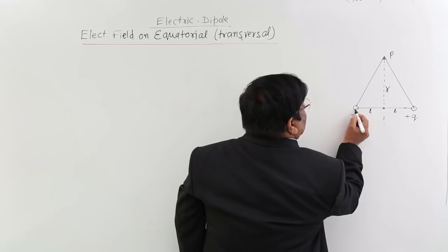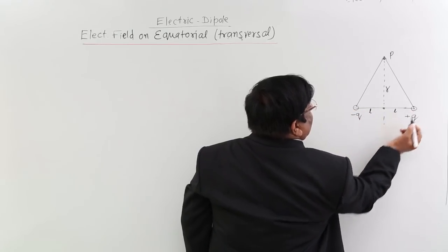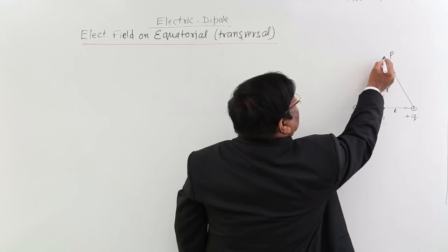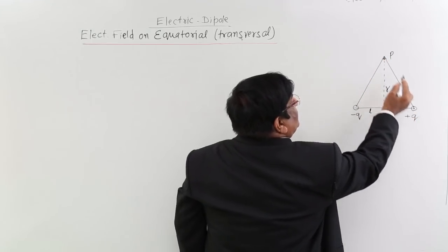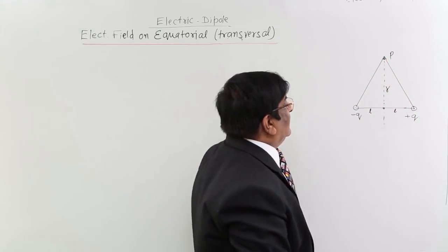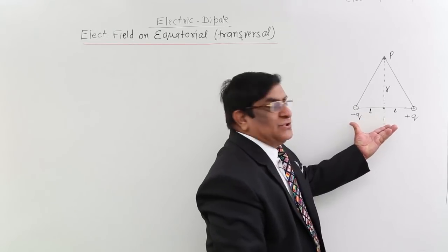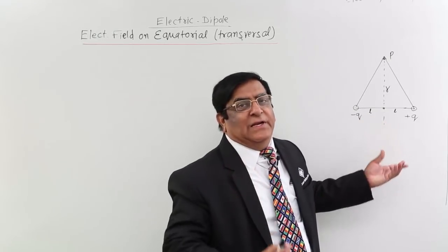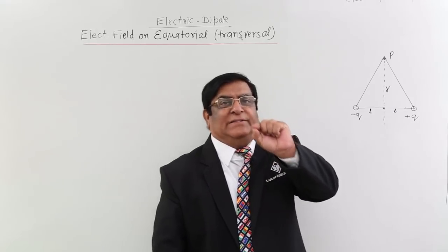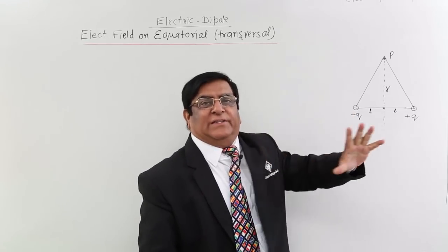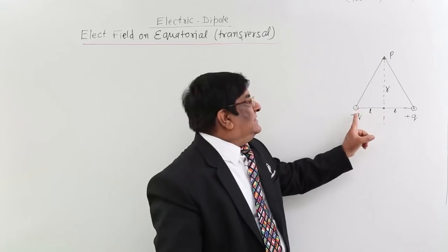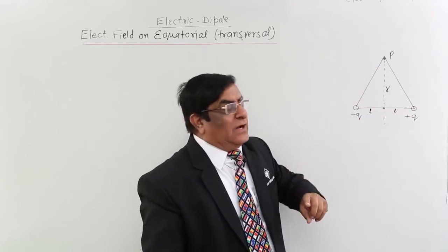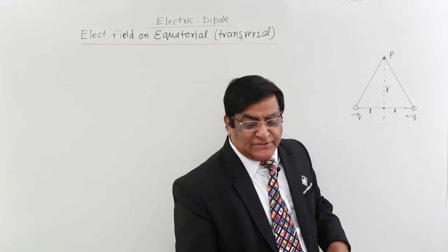This is the minus Q charge and this is the plus Q charge. The minus Q charge is a point charge which will create an electric field at point P. The plus Q charge will also create an electric field at P. The dipole as a whole does not make the electric field — the electric field is always made by the individual point charges. Both charges separately will create electric fields at point P.